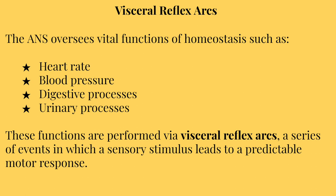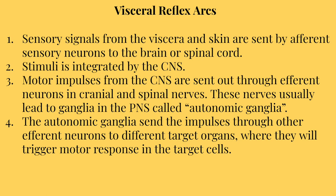The ANS oversees vital functions of homeostasis such as heart rate, blood pressure, digestive processes, and urinary processes. These functions are performed through visceral reflex arcs — a series of events in which a sensory stimulus leads to a predictable motor response. Visceral reflexes occur within the soft tissues of our organs. For example, defecation: when someone eats, their body goes through a digestive process that turns food into a waste product called feces, done in the soft tissue of the digestive tract.